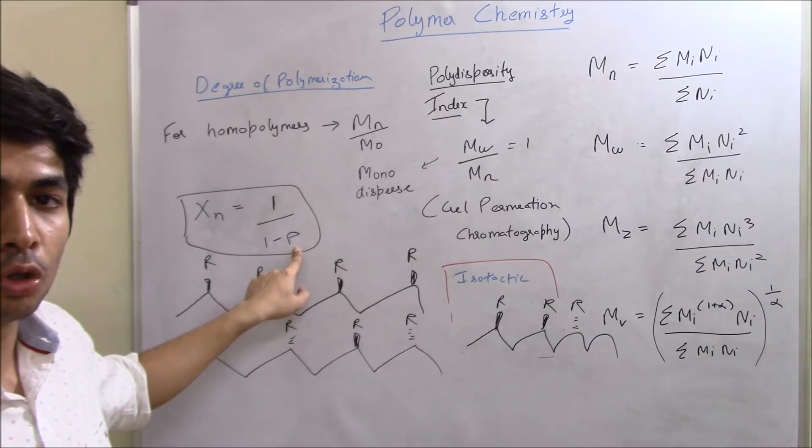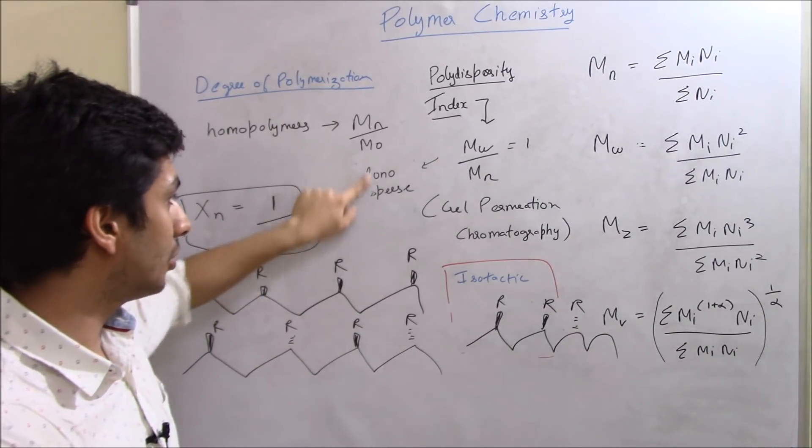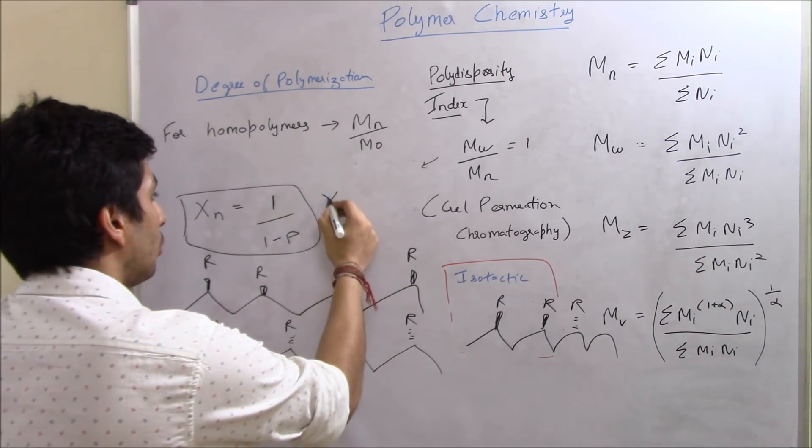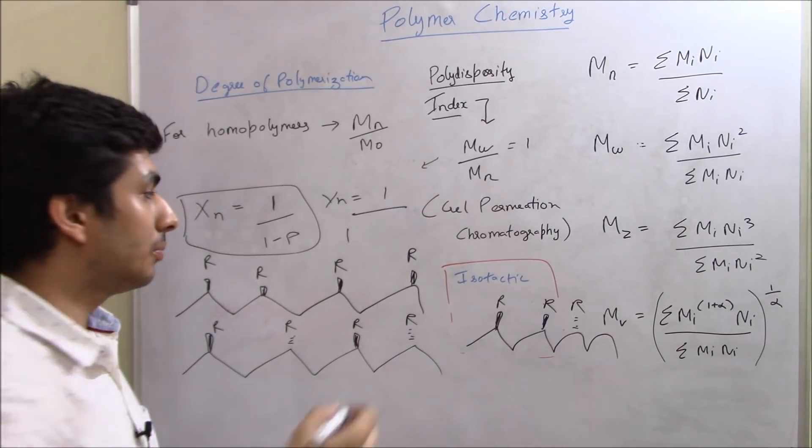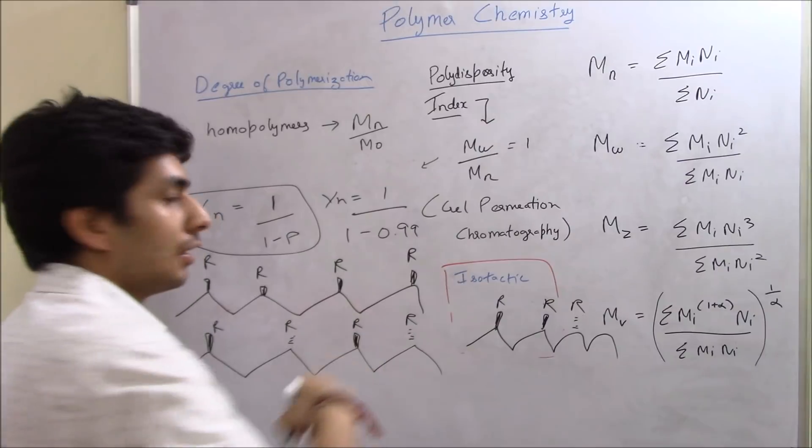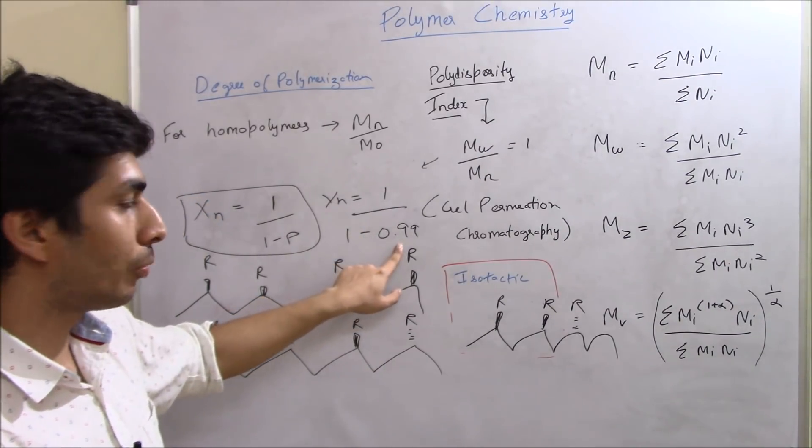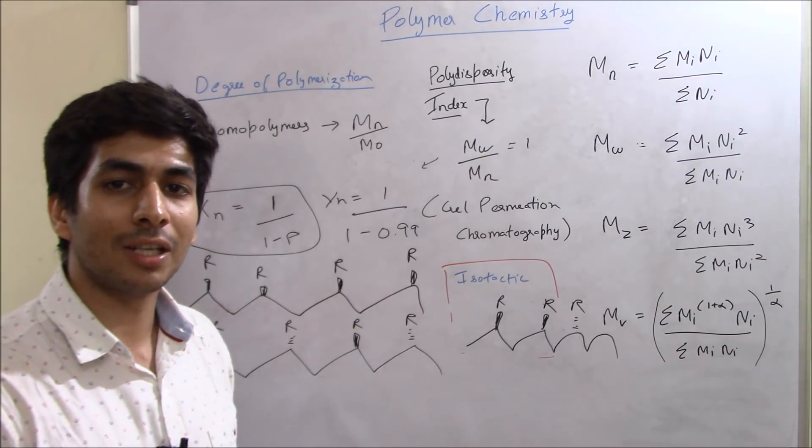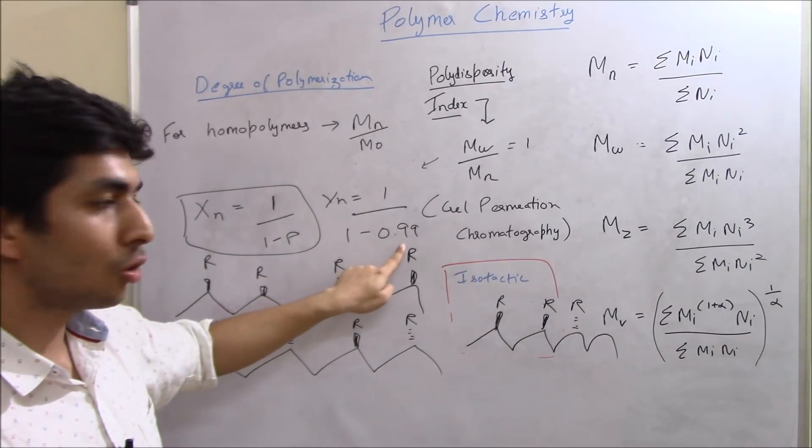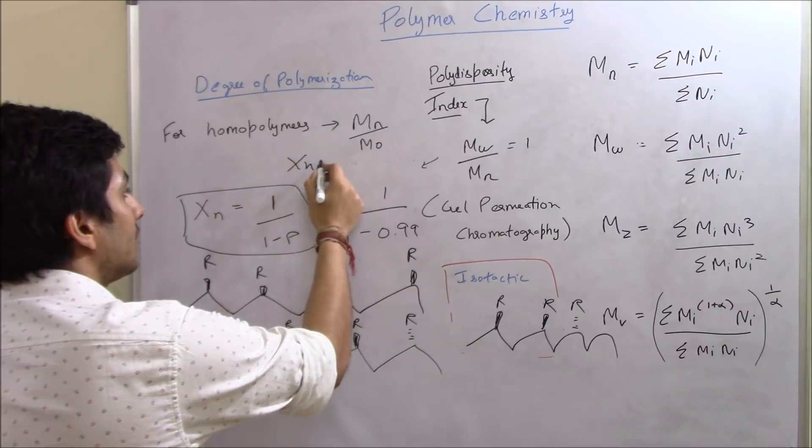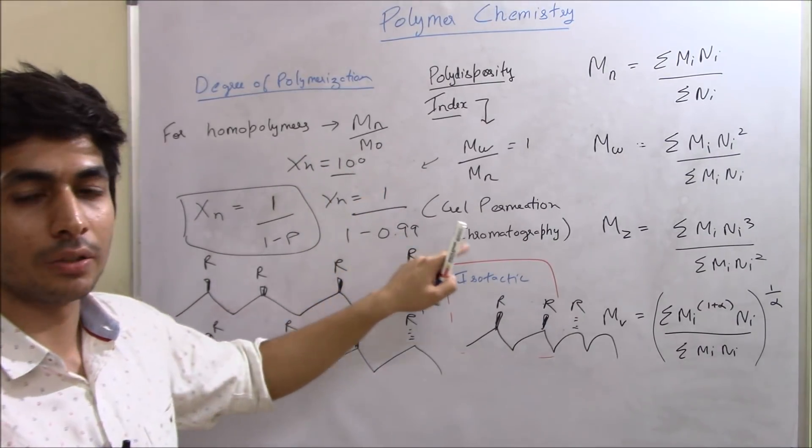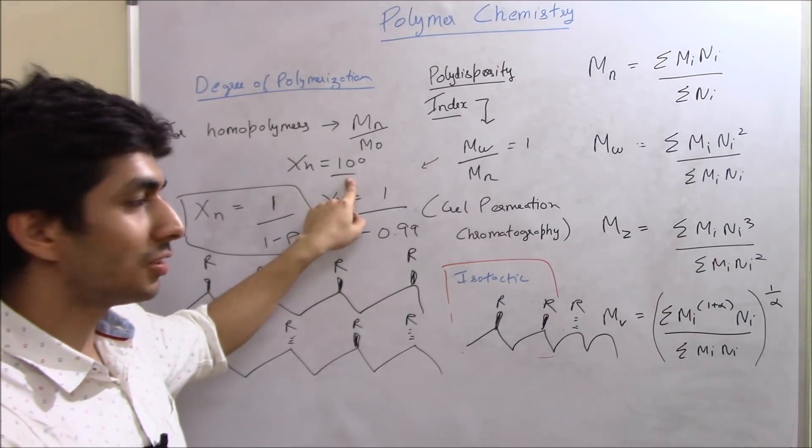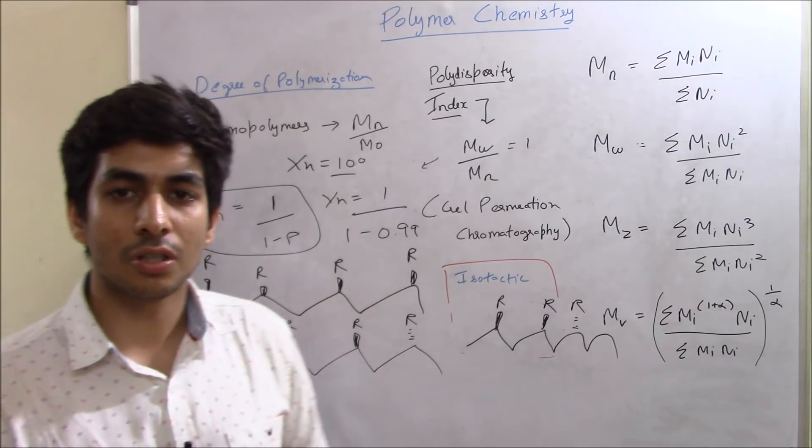So 1 upon 1 minus P, what does P mean over here? P basically tells you the conversion percentage of a monomer. P tells you the conversion percentage of a monomer. So let's say we want to find a degree of polymerization when the value of P is 99 percent. So XN equal to 1 upon 1 minus 0.99. So I'm saying that 99 percent of the monomer has been converted to polymer or has been utilized in the polymerization process. So this is the formula, 1 upon 1 minus 0.99. So this will give us degree of polymerization as 100 because it will be 1 upon 0.01. So it will give you value 100. So that means degree of polymerization is 100 if your monomeric percentage conversion is 99 percent.